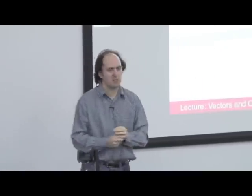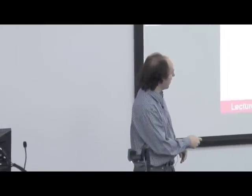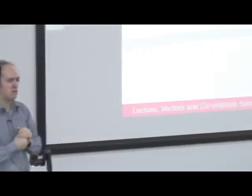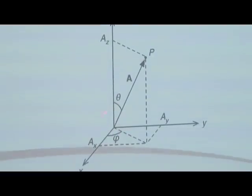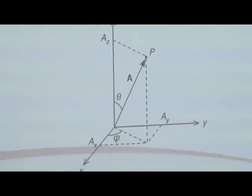Vector A we can call the displacement coefficient — this is bold face A — which is the displacement from the origin of our x, y, z coordinates to point P. We've got components Ax, Ay, and Az, which are the components along the x-axis, the y-axis, and the z-axis that define position point P and vector A. We've also got angles theta and phi, which define the angle that vector A makes to the various axes: an angle between the z-axis and A, and an angle between the x-axis and phi. The angle between the y-axis and A would be 90 minus phi. So that's fully defined.